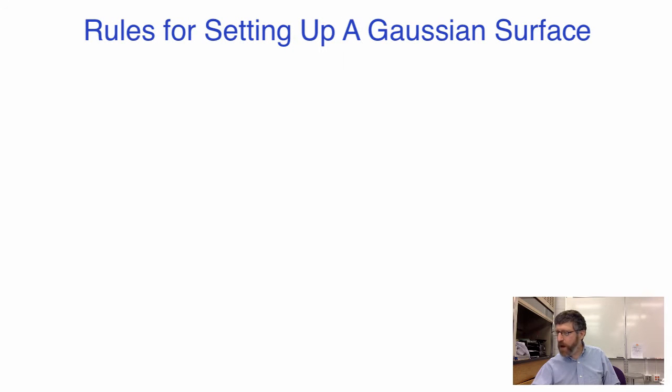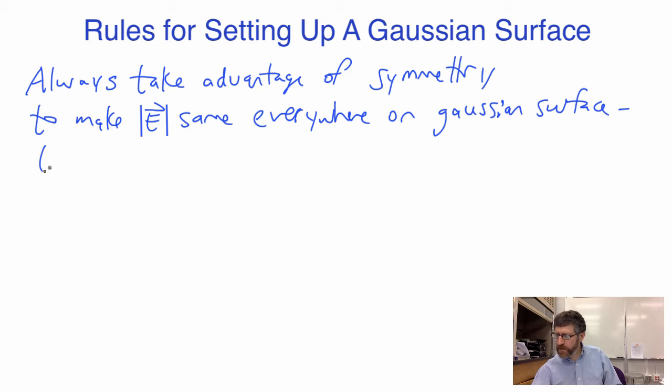When you use Gauss's law, you want to always do the following. Always take advantage of symmetry so that the E value is the same everywhere on your Gaussian surface. The point of this is to take E out of the integral.